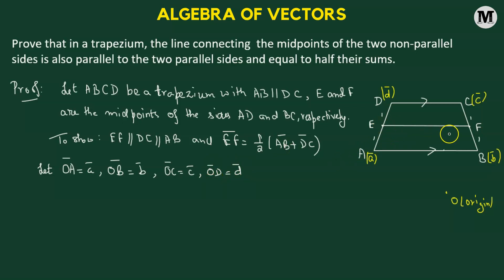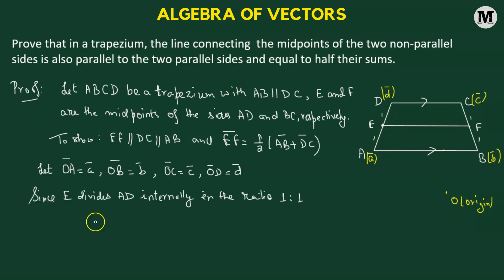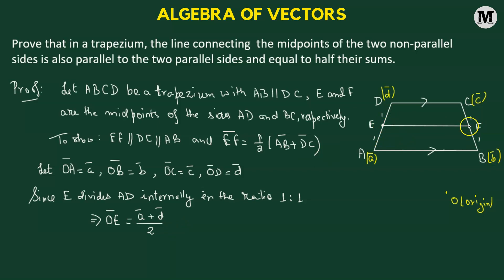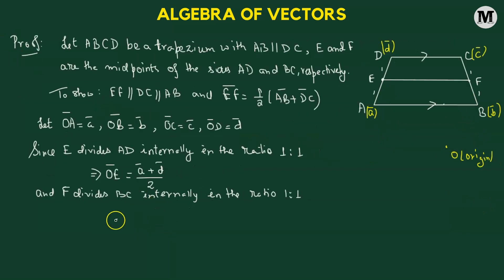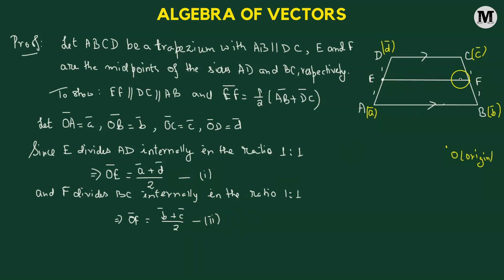Using these four vectors, we find the position vectors of E and F. Since E divides AD in ratio 1:1 internally, by the internal section formula: OE vector = (a + d) / 2. Similarly, OF vector = (b + c) / 2. Let us label OE as equation 1 and OF as equation 2.